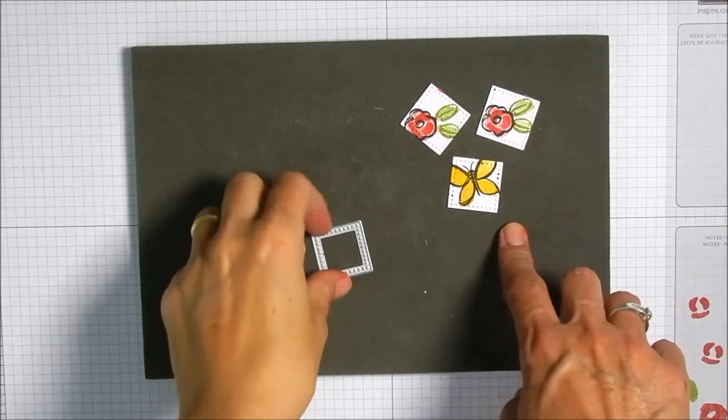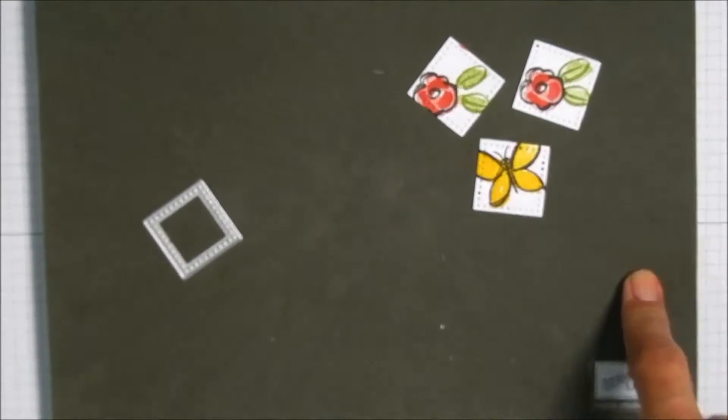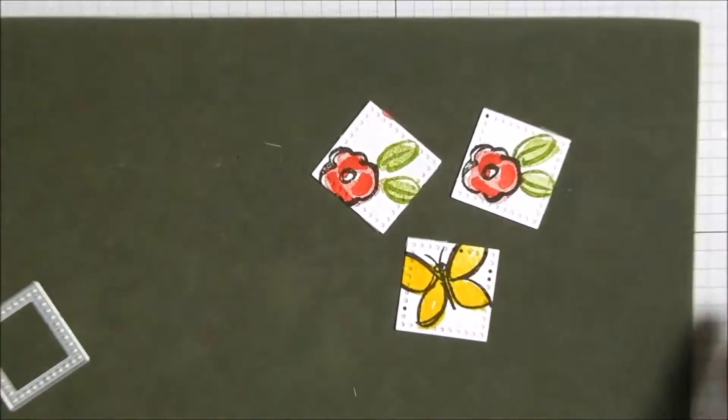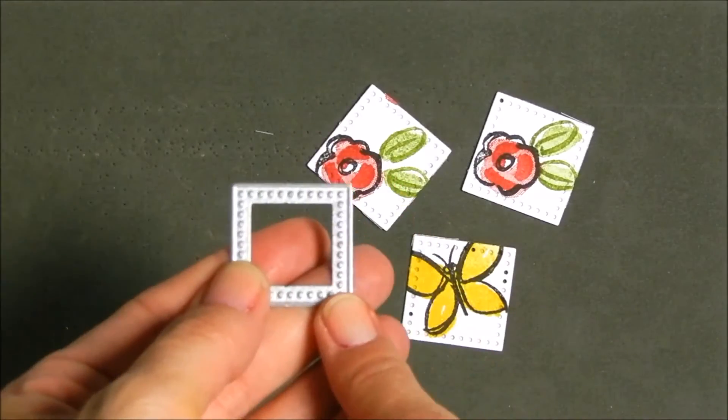I cut those out with that teeny little die that comes in the Flip It set. So I've got my little squares for the front of the card and they kind of look a little modern I guess.